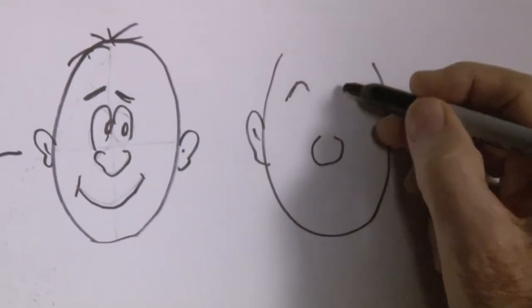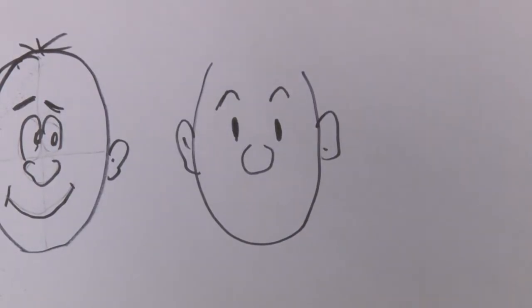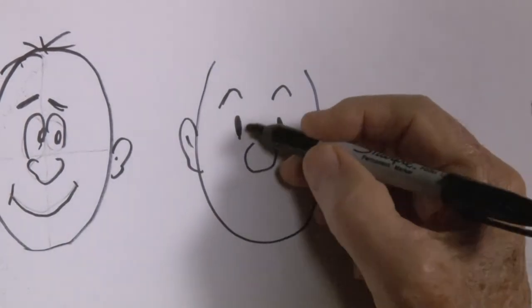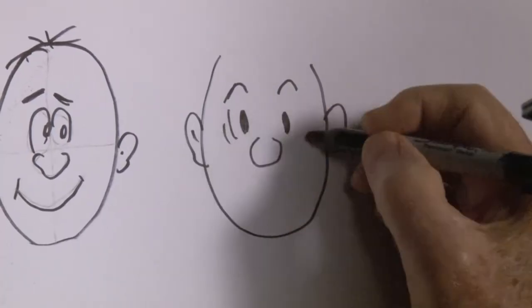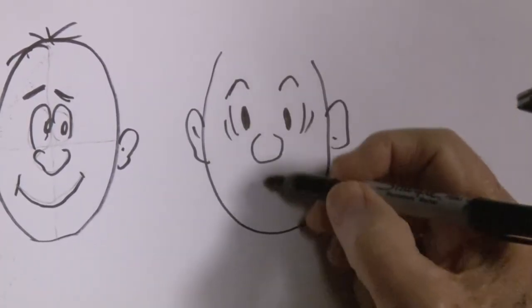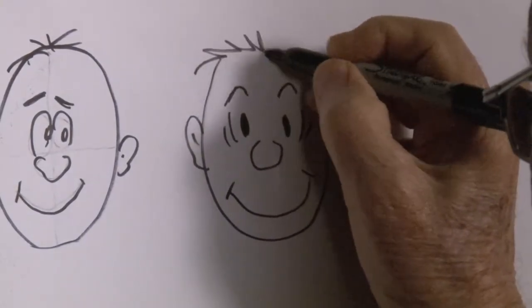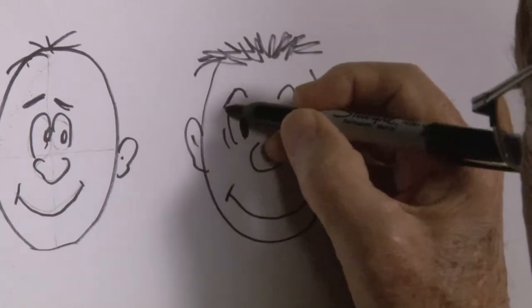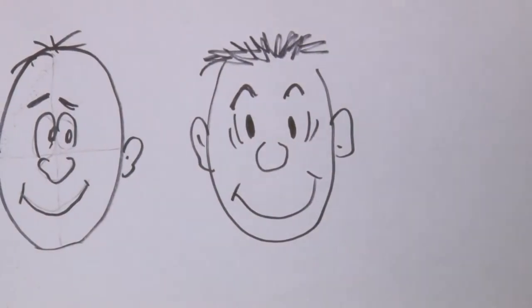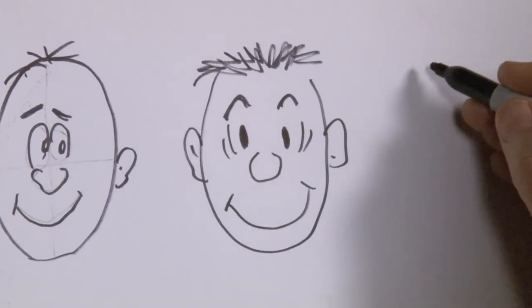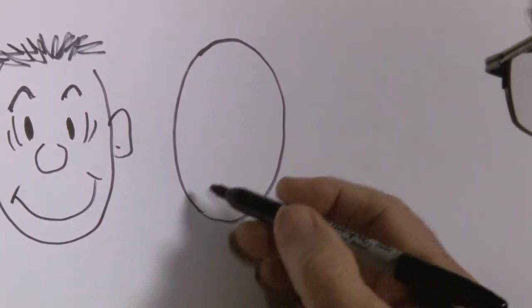And as in a lot of cartoons, eyes are represented as, well, like this. Maybe a little circular line or two out to the side. But you don't have to use the circles up close.